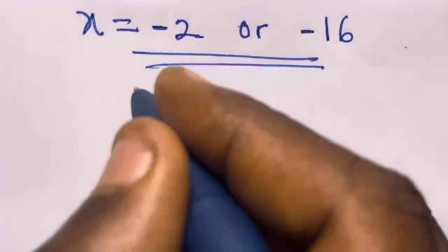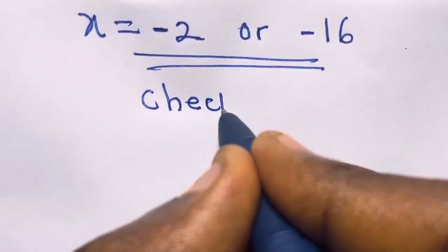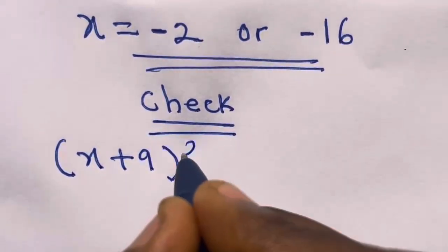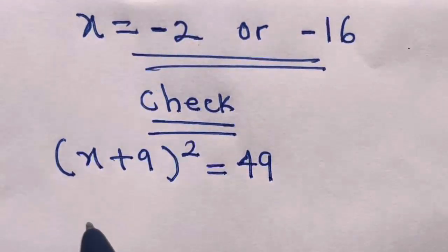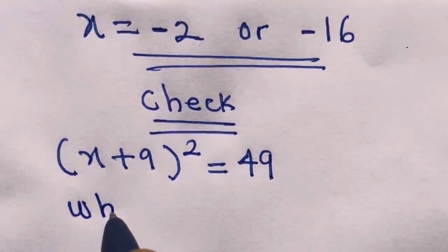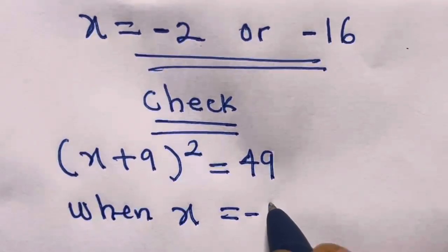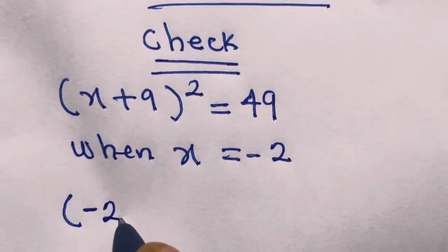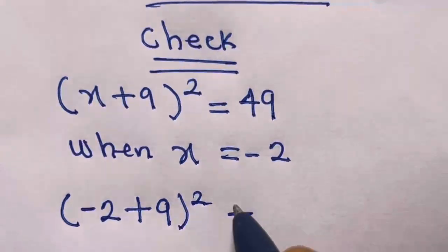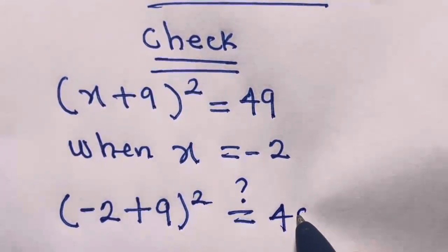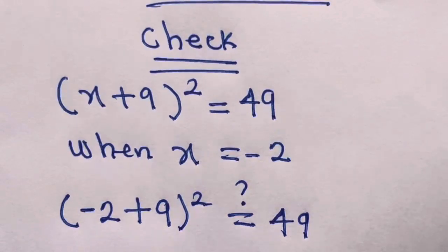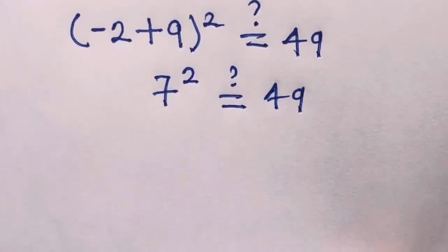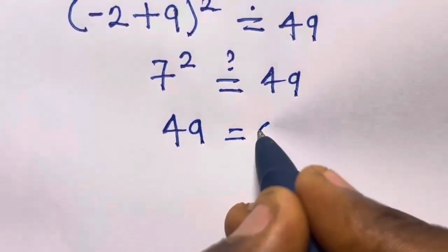So you can easily check this — let's verify. We have x plus 9 squared equals 49. When x equals minus 2, we have minus 2 plus 9 squared. Minus 2 plus 9 gives us 7 squared. Is this equal to 49? Yes — 7 squared is 49, which equals 49. Verified.